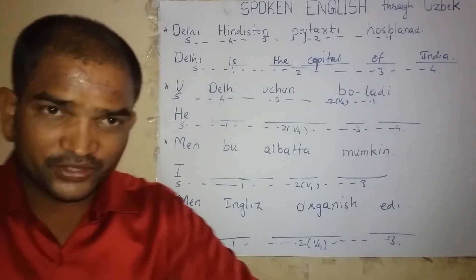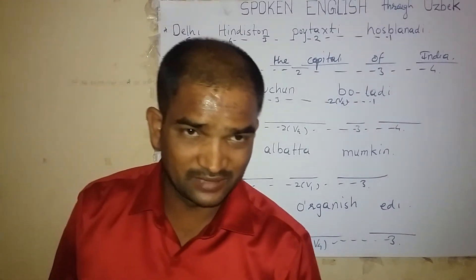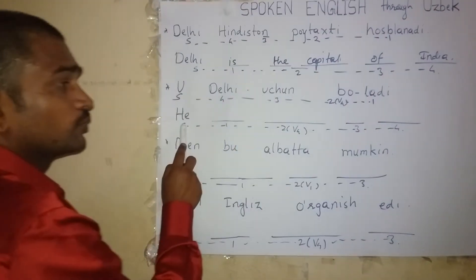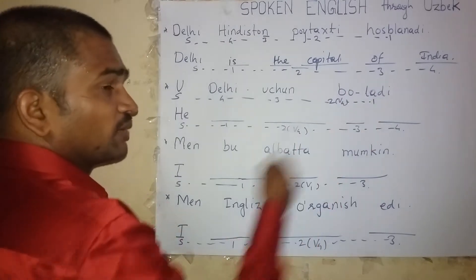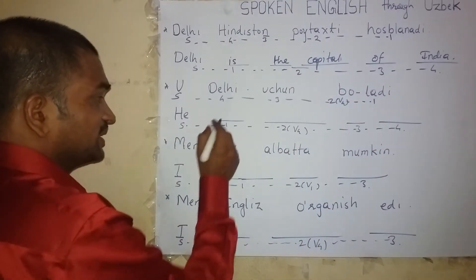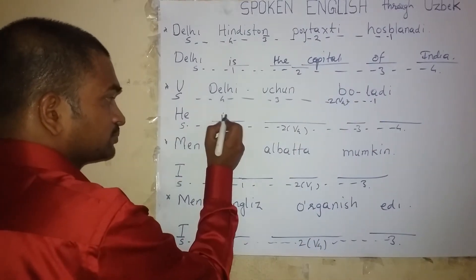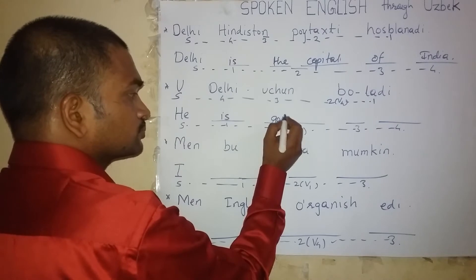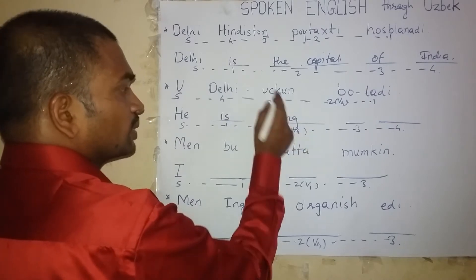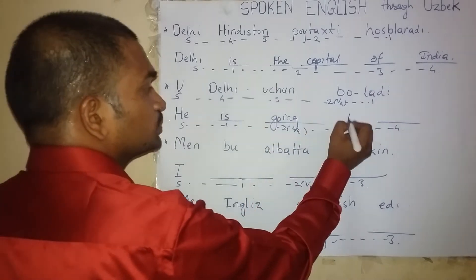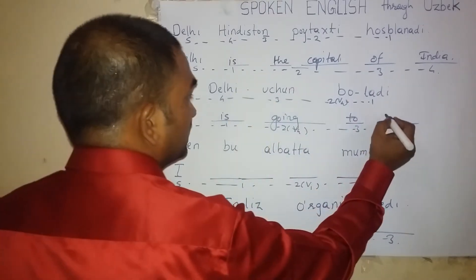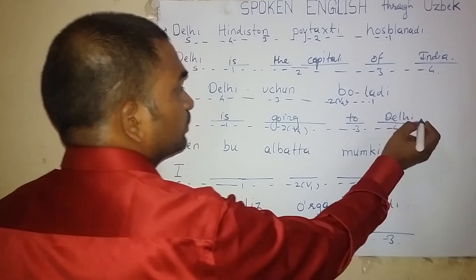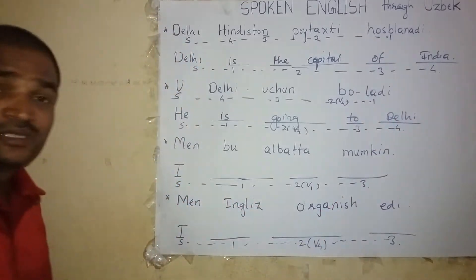Pause the video and try yourself. Start. The word for 'who' — he. The word for Ladi — is. The word for Bo — going. The word for Wutsun — to. The word for Delhi — Delhi. He is going to Delhi.